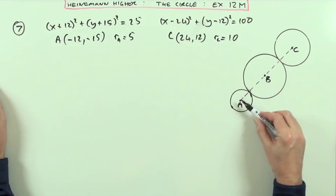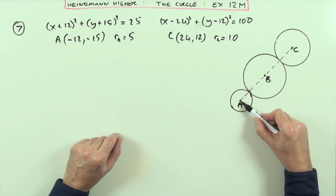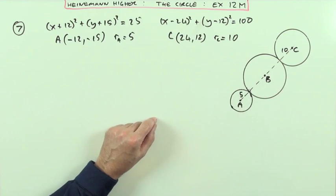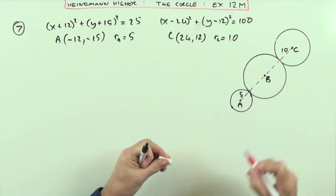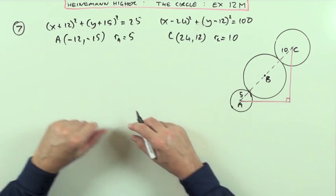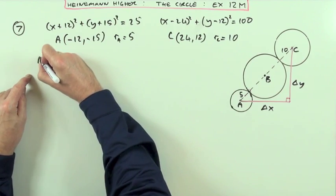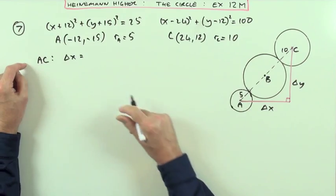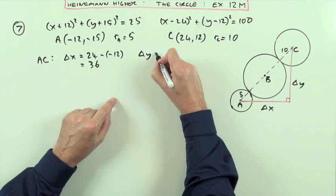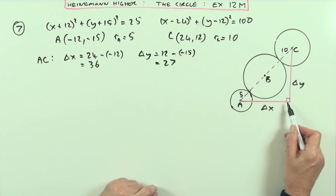Now, how do you find the size and position of circle B? The radius would be easier to get first. I need to work out the distance between the centers A and C. Looking at the triangle, the difference in x-coordinates is 24 minus negative 12, which is 36, and the difference in y-coordinates is 12 minus negative 15, which is 27. So I go 36 along and 27 up.